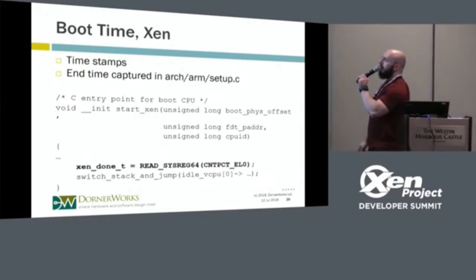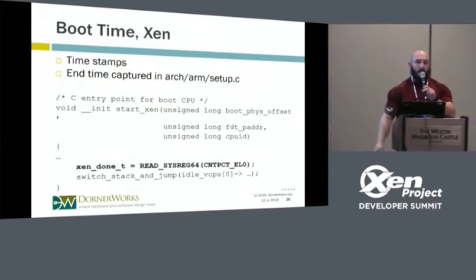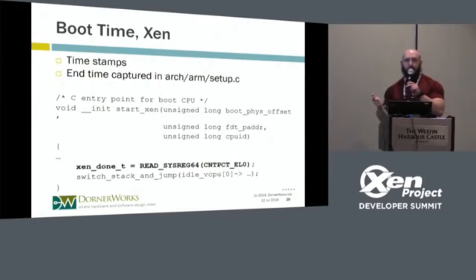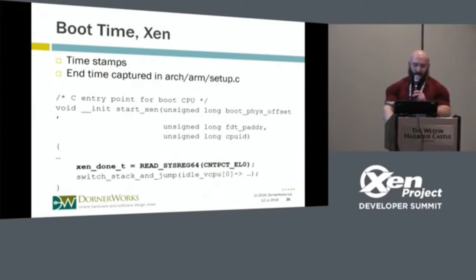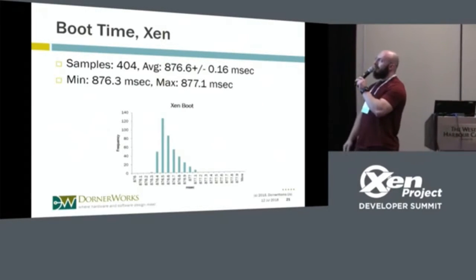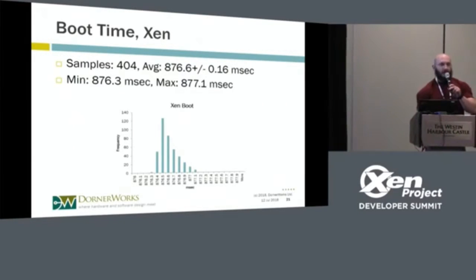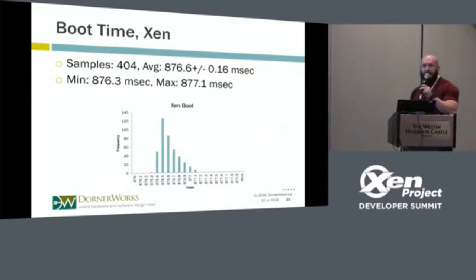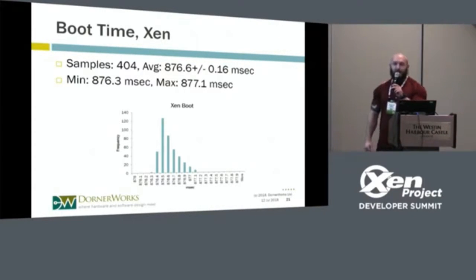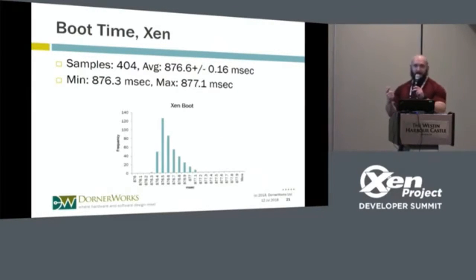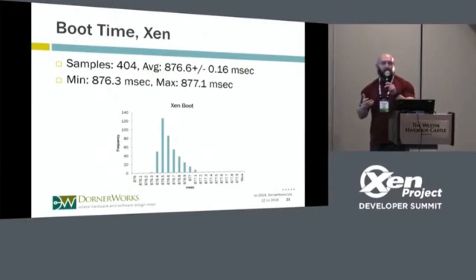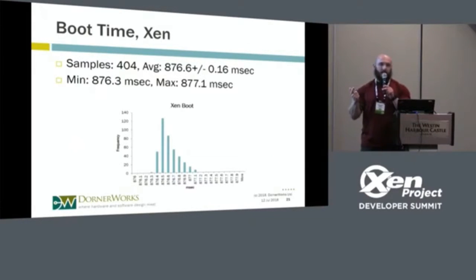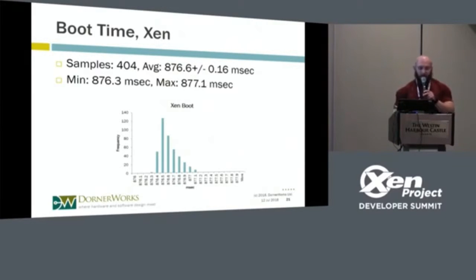The first metric we looked at was Xen boot time — how long does Xen itself take to come up? We instrumented U-boot and the Xen kernel to place timestamps pulled from the timestamp counter. Over 404 samples, it typically takes around 876 milliseconds for Xen to complete its boot process. This is mainly dependent on how much RAM you have — doubling RAM from 2 to 4 gigabytes adds about 30% more time. Page allocation and referencing directly affect this, as does your Dom0 configuration.